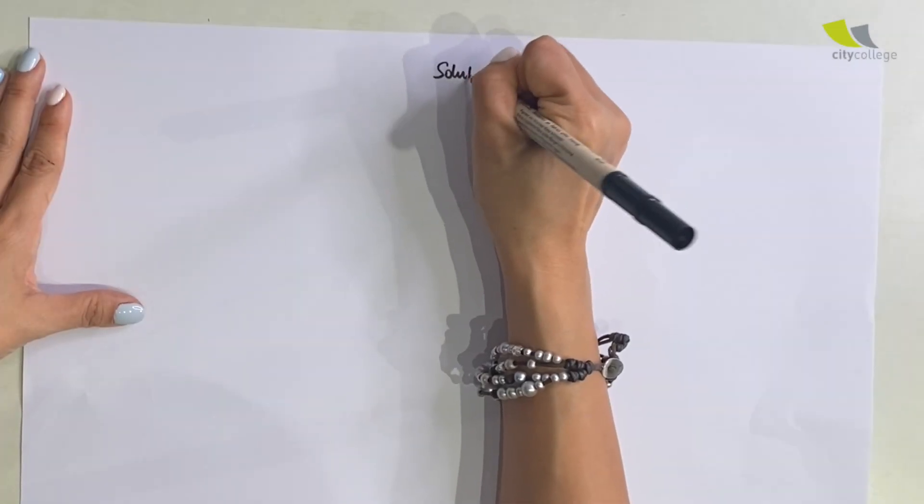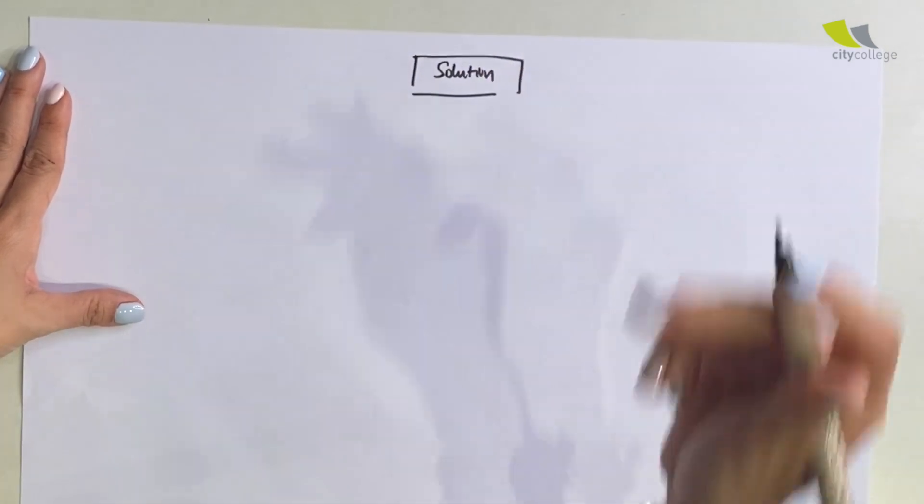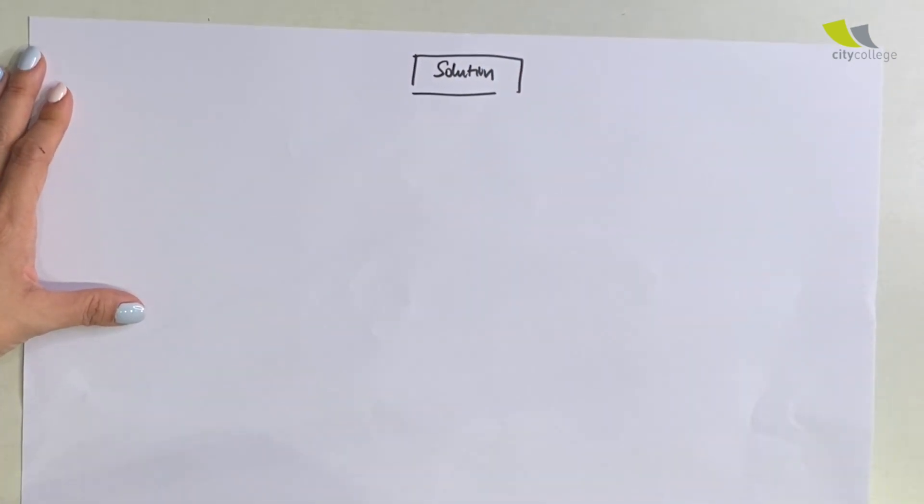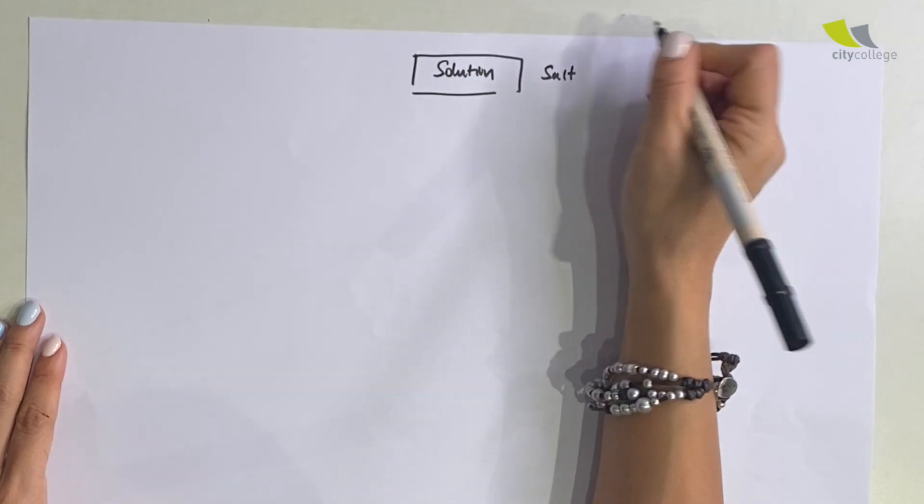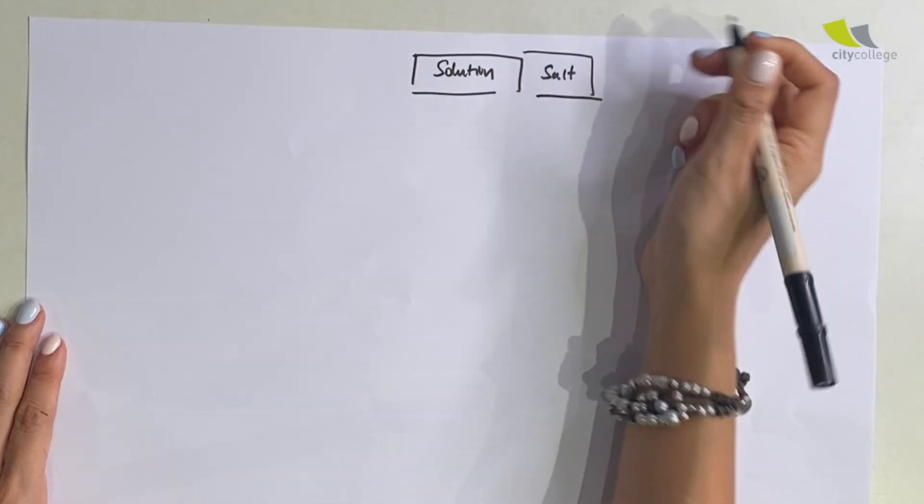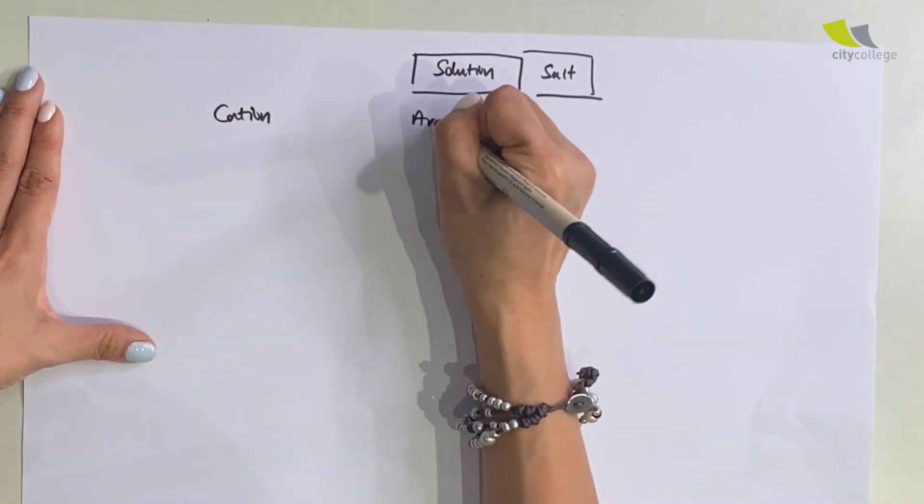We end off last session telling you the importance of having solution. Because solution is the vital key to conducting the rest of all the different tests to find out the unknown. And most of the time the unknown appears in the form of salt. And what is a salt? Salt is made up of a cation and an anion.